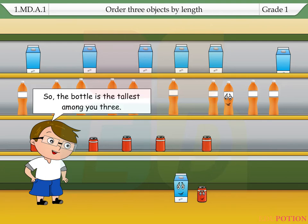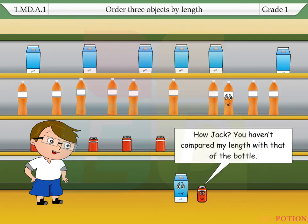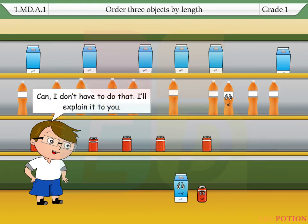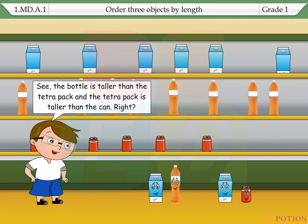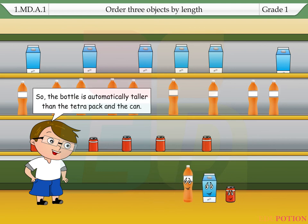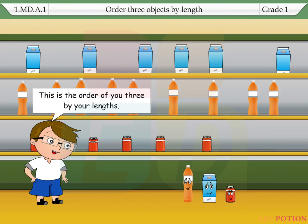So, the bottle is the tallest among you three. How, Jack? You haven't compared my length with that of the bottle. I don't have to do that. I'll explain it to you. See, the bottle is taller than the Tetra Pak and the Tetra Pak is taller than the can, right? So, the bottle is automatically taller than the Tetra Pak and the can. This is the order of you three by your lengths.